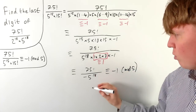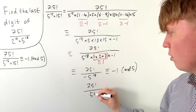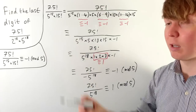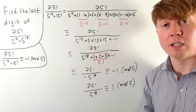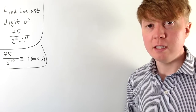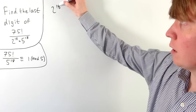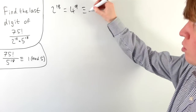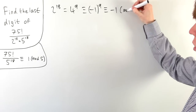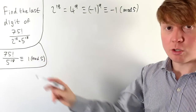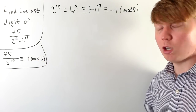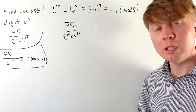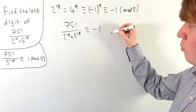We're now very close to finding 75! / (2^18 × 5^18) mod 5. We note that 2^18 = 4^9, and since 4 ≡ −1 mod 5, we have 2^18 ≡ (−1)^9 = −1 mod 5. So dividing by 2^18 is equivalent to dividing by −1 mod 5. Since 75! / 5^18 ≡ 1 mod 5, dividing by −1 gives 75! / (2^18 × 5^18) ≡ −1 ≡ 4 mod 5.